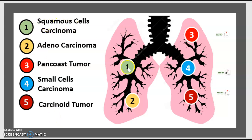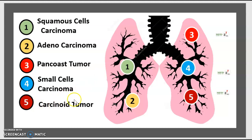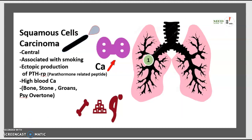The first category is squamous cell carcinoma, the second is adenocarcinoma, the third is Pancoast tumor, the fourth is small cell carcinoma, and the last one is carcinoid tumor. Let's start with the first one: squamous cell carcinoma.